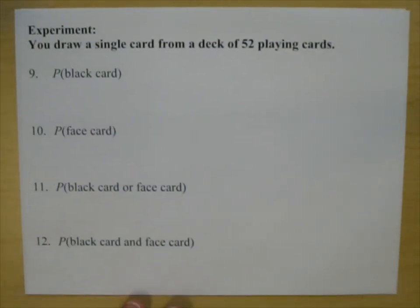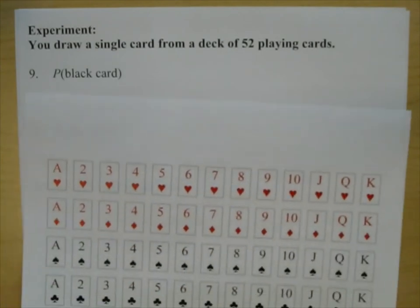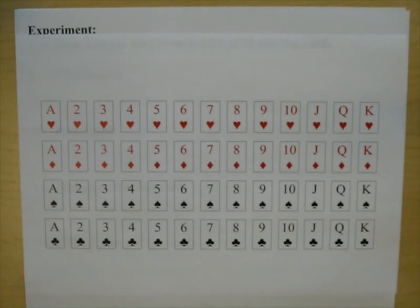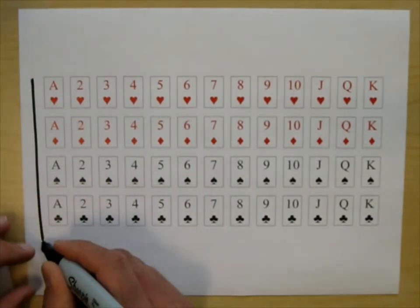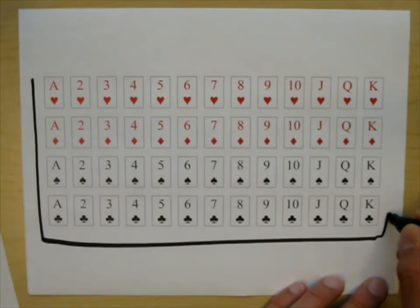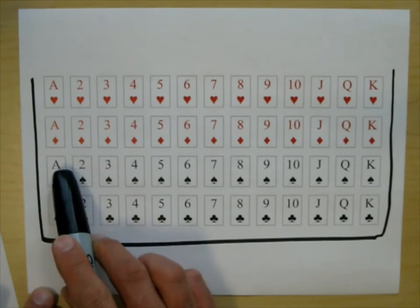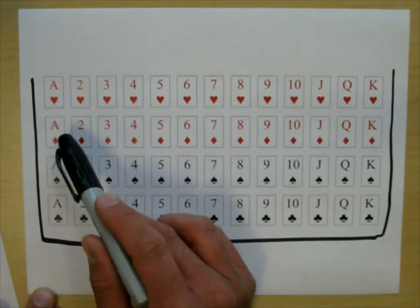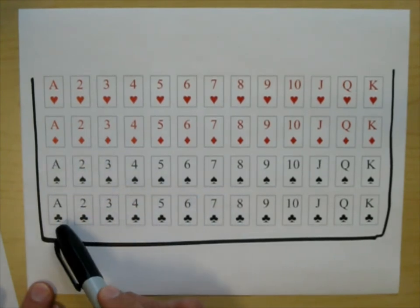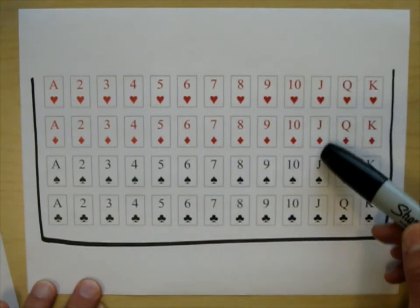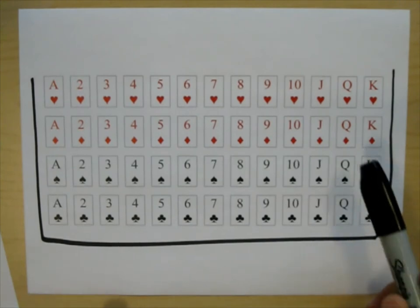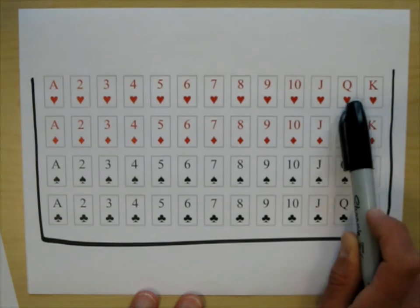You draw a single card from a deck of 52 playing cards. Think of these playing cards as 52 marbles. We have aces — there are four aces. We have hearts, diamonds, spades, and clubs. You have aces, twos, threes, all the way through tens, and then jacks, queens, kings. The jacks, queens, and kings are sometimes called face cards because they have faces on them.